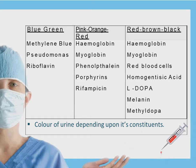These are the types of color that you may see in urine from a disease condition. The blue-green color could indicate a problem with methylene blue, Pseudomonas, or riboflavin. The pink-orange-red could be related to hemoglobin, myoglobin, phenolphthalein, porphyrin, or rifampicin. The red-brown-black could also be due to hemoglobin, myoglobin, red blood cells, homogentisic acid, alkaptonuria, melanin, and methyldopa. So the color of the urine depends upon its constituents.